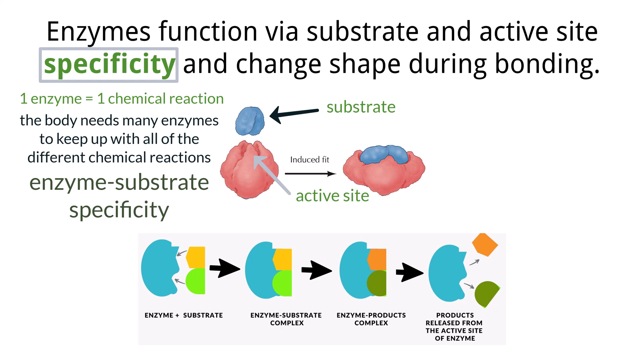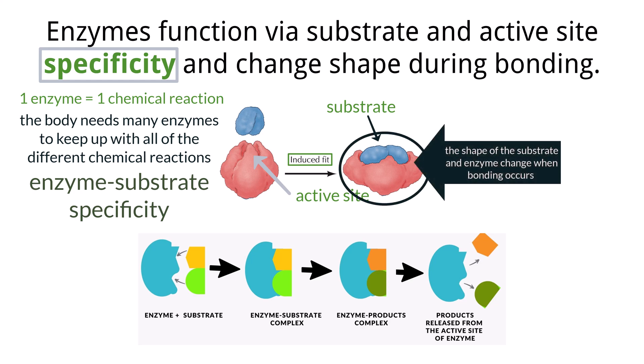When they do find each other, and the substrate does fit into and bind with the active site, the process of induced-fit bonding occurs, which means that both the substrate and active site change shape. This alteration in shape makes it easier for bonds within the substrate molecule to break and new bonds to form. When the process is complete, and the product of the reaction detaches from the active site, the shape of the active site reverts back to its original structure, which allows another of the same substrate to bond to it later on so the process can happen over and over again.